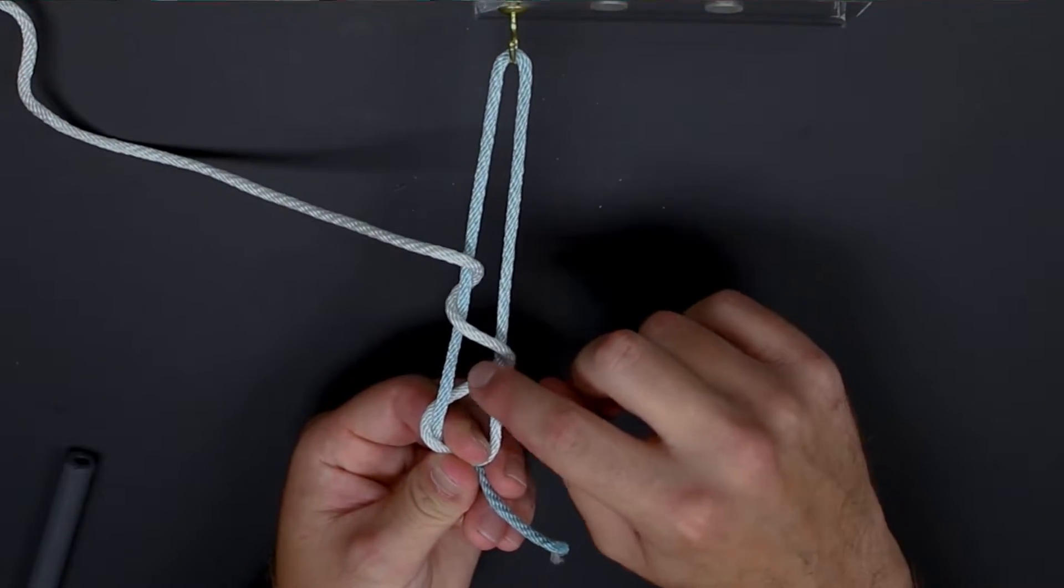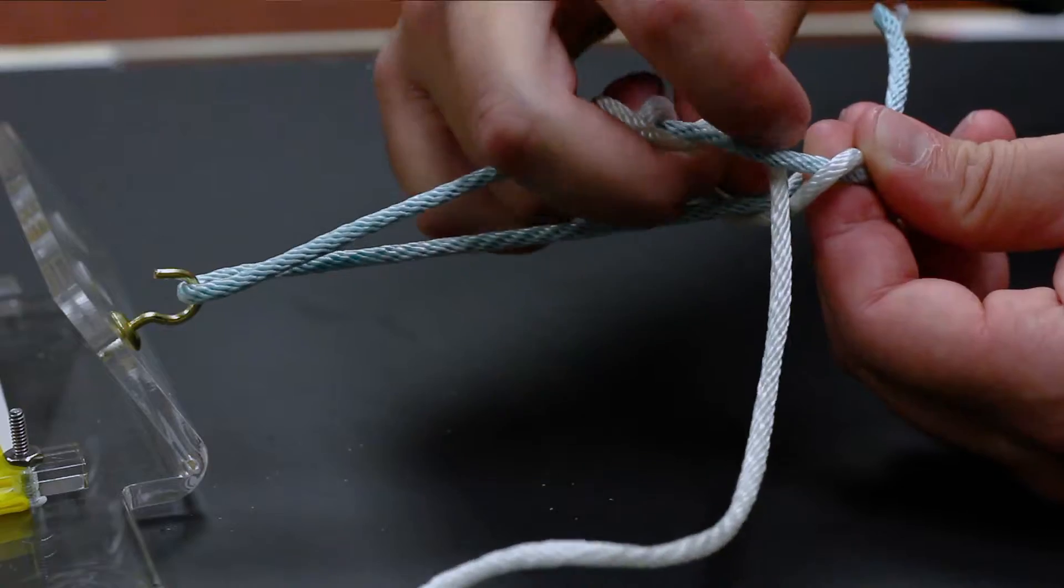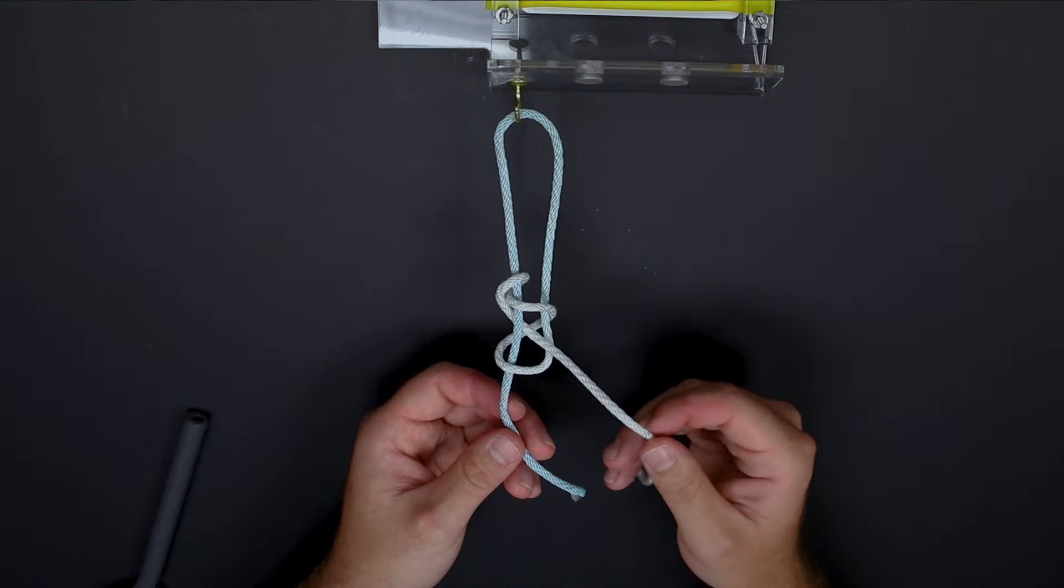You see how we then have this loop or triangle that we have created. We will pull the suture through this loop or triangle and then we have completed our knot.